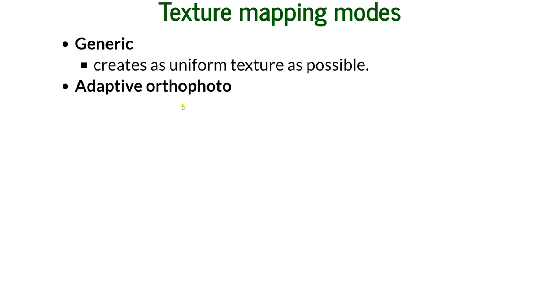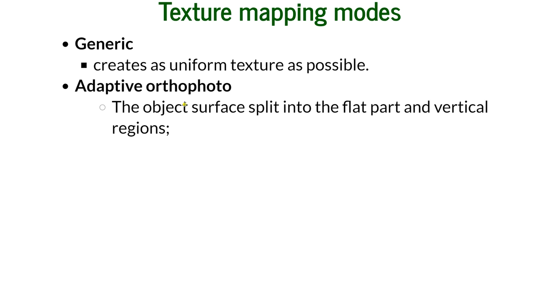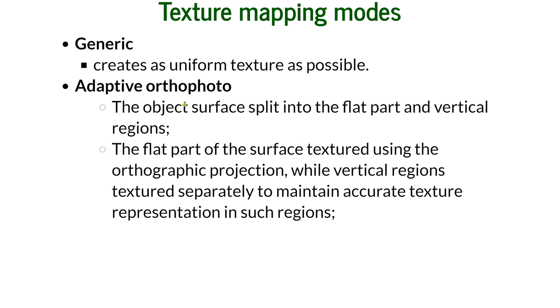Adaptive orthophoto divides the object surface into two parts: a flat part and vertical part. The flat part is textured using orthographic projection, and the vertical regions are textured separately to maintain accurate texture representation. If you have aerial photography of places with a lot of buildings, you would use adaptive orthophoto so that the walls of the buildings are textured separately.